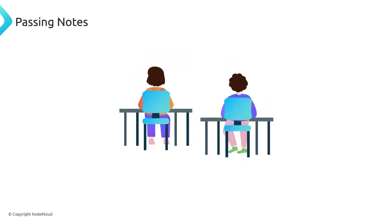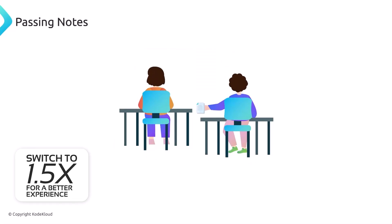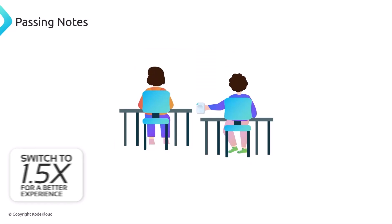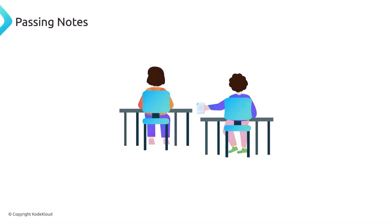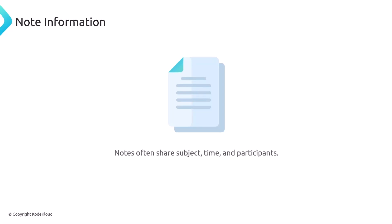Passing notes in class — if you're a millennial like myself, you'll definitely remember this, but for the newer generation, this is how you would communicate with your friends during class. Note that smartphones weren't really a thing until 2008, 2009. The way it would happen is you would open the note, read it, and these notes would have information like subject, the time, and who's involved.